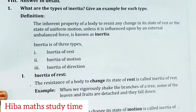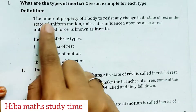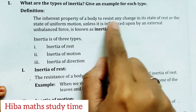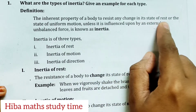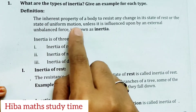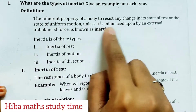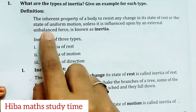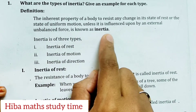So, inertia — the definition: The inherent property of a body to resist any change in its state of rest or the state of uniform motion, unless it is influenced upon by an external unbalanced force, is known as inertia.